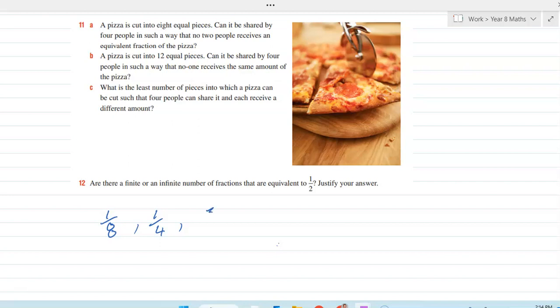If you gave three eighths to one, that leaves you with five eighths. And you gave two eighths to another, that leaves you with three eighths. That would be a quarter. And then it'd have to be an eighth and an eighth.